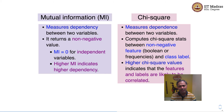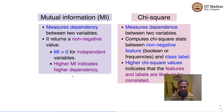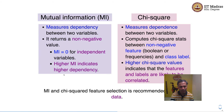Chi-square measures dependence between two variables. We typically compute chi-square statistics between a non-negative feature and a class label. The non-negative features could be boolean features or frequencies. A higher chi-square value indicates that features and labels are likely to be correlated, and such features are highly useful for classification problems. Hence we choose to include features with higher chi-square values. Mutual information and chi-square feature selection are recommended for sparse data.